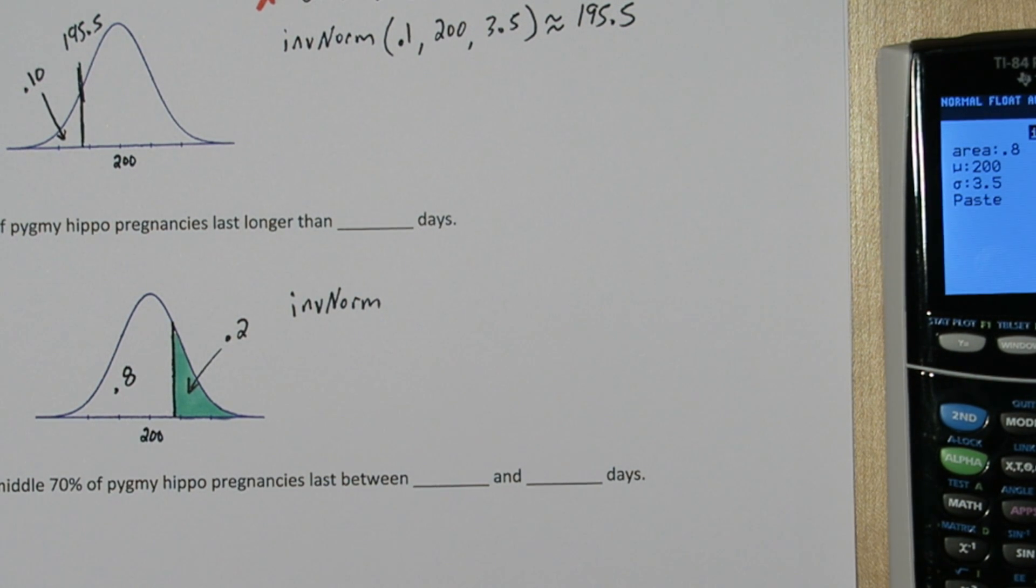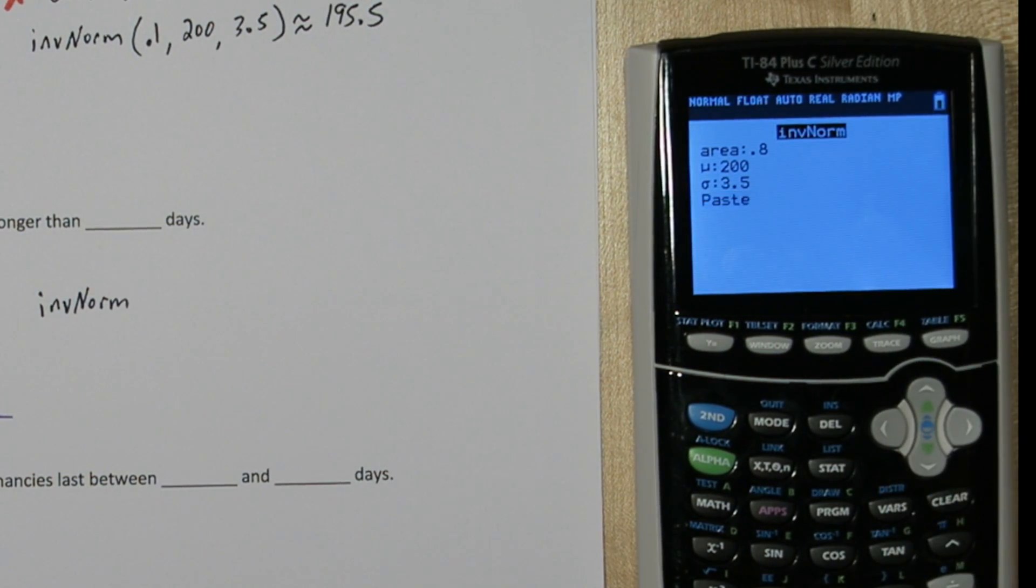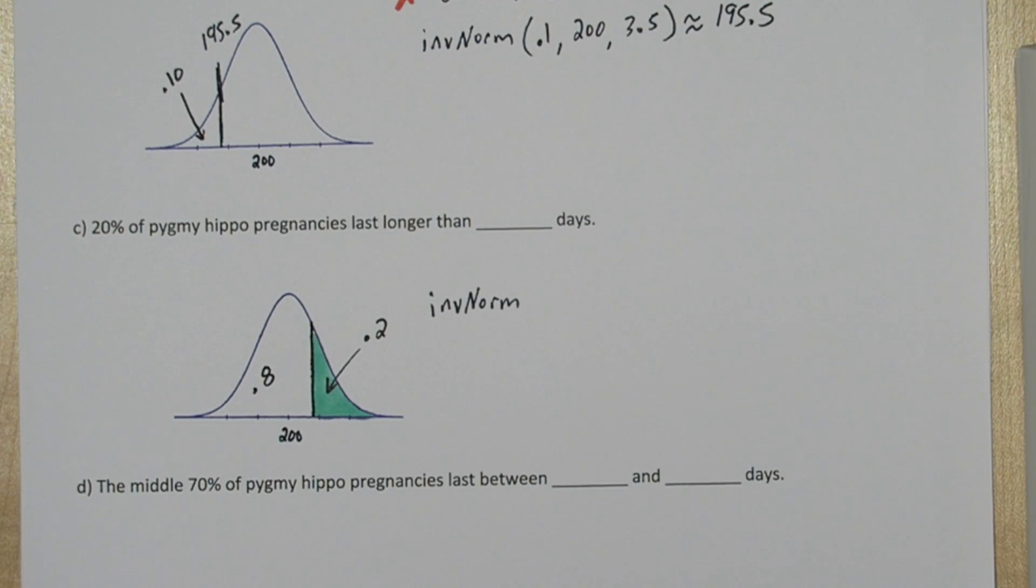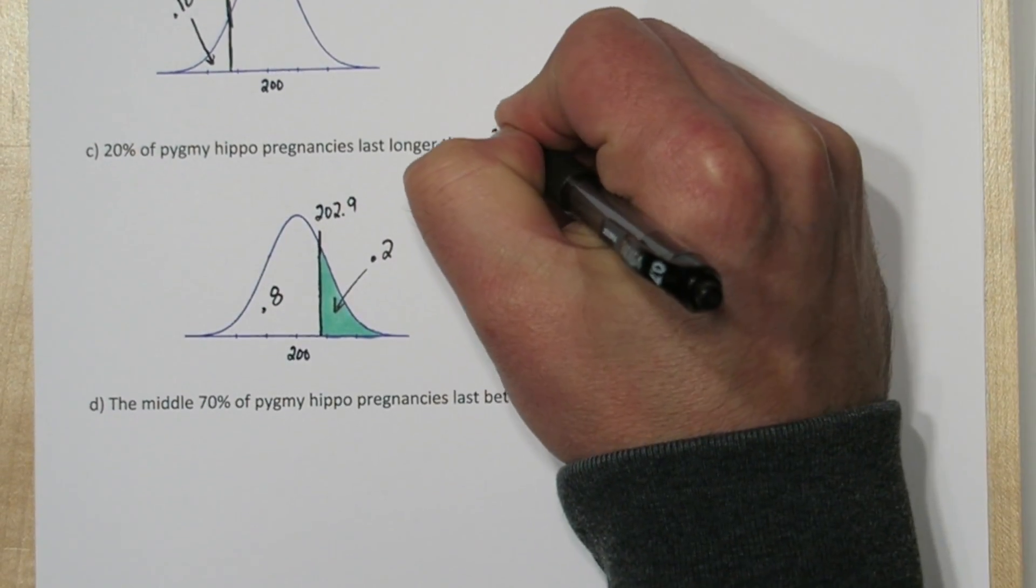Anytime you're inputting area into inverse norm, you're referring to the area to the left of the cutoff. We'll leave our mean and standard deviation. And there's our cutoff value. Approximately 202.9.